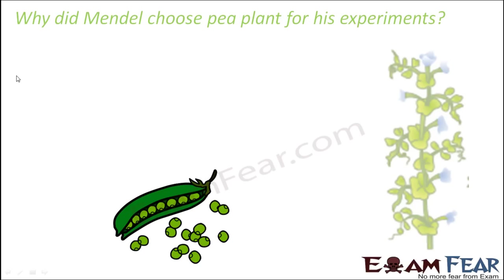The first question that comes to mind is: why did Mendel choose the pea plant for his experiments? It was not a random choice — he gave it thought and found that the pea plant was the most suitable organism for his experiments. So what were those advantages that made him choose the pea plant?